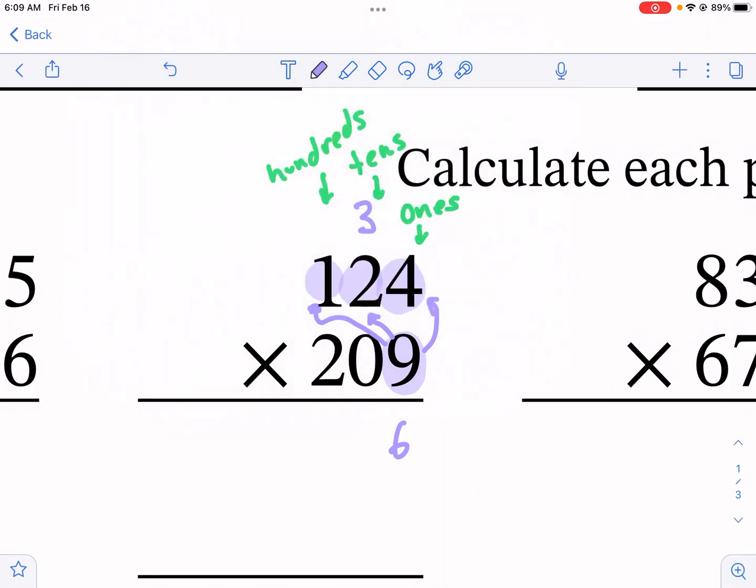So I need to do the nine times the two now. Can't forget that one. By the way, I forgot. I'm done with the four so I can erase that. Now I have nine times two and that's 18, but we're not going to write 18.